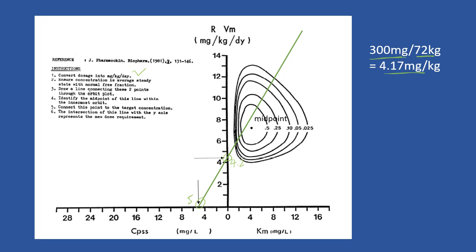The next step is to identify the midpoint in the inner circle. Your target concentration is 10; connect this point 10 to the midpoint to draw another straight line. The intercept on the y-axis will be the new dosing rate, which will be around 5.5.